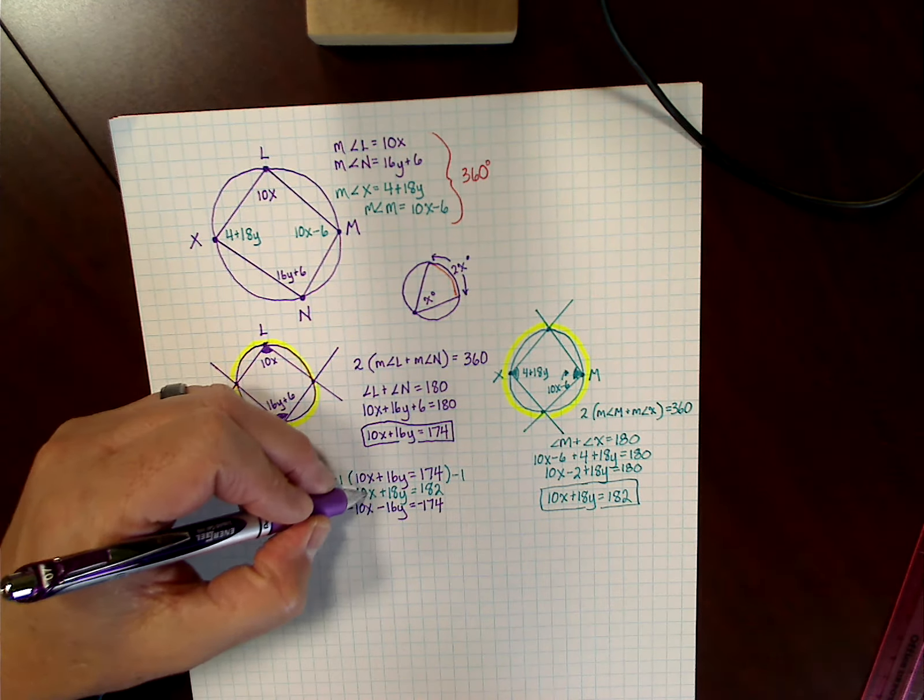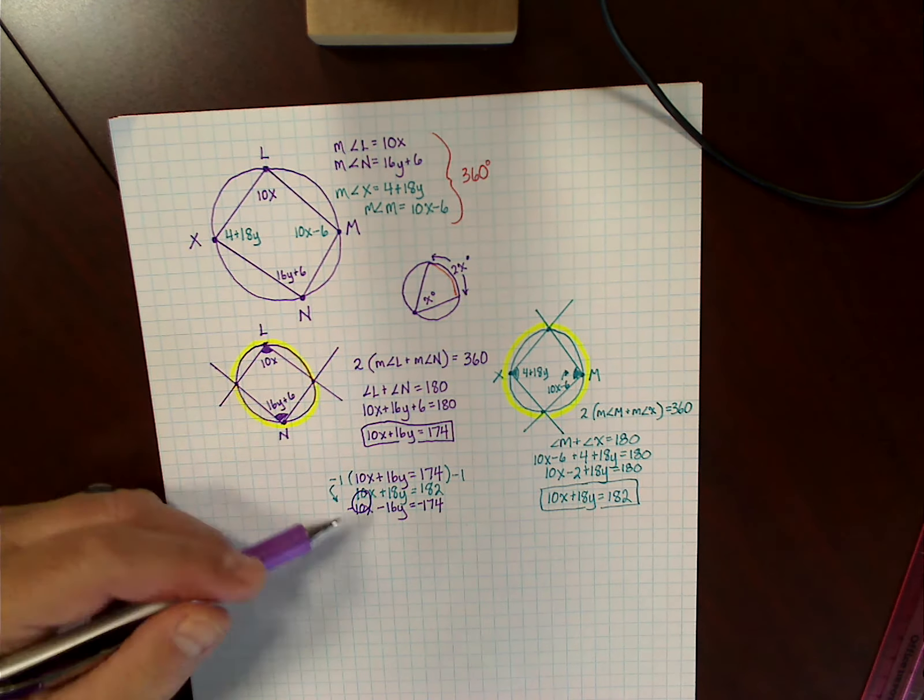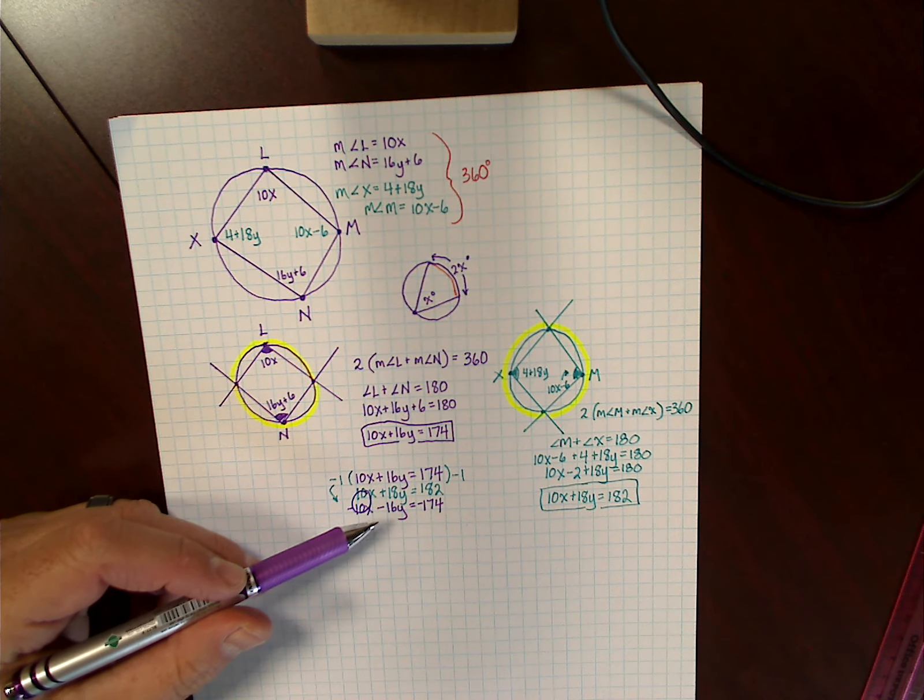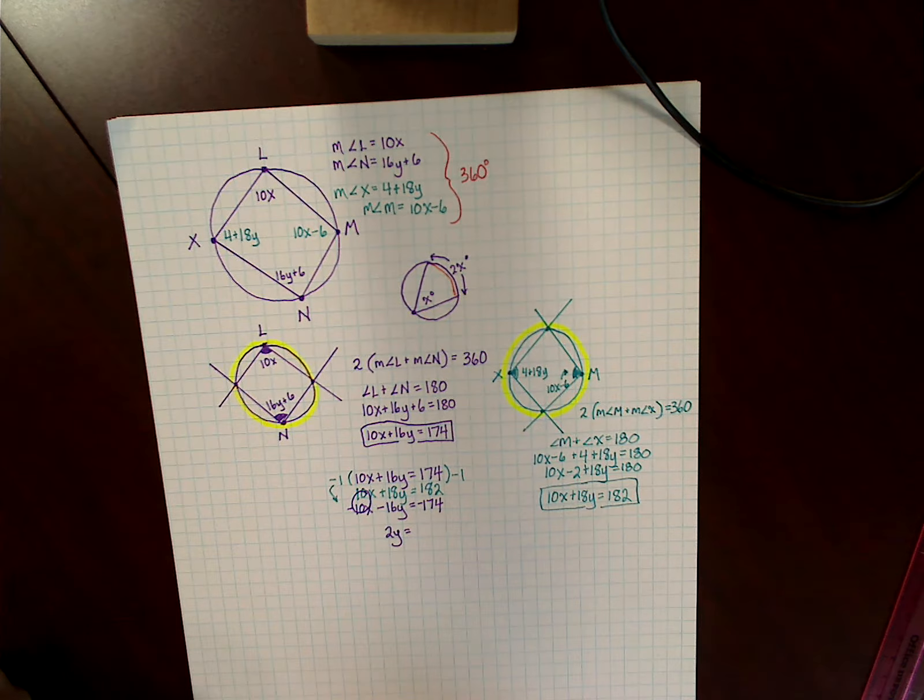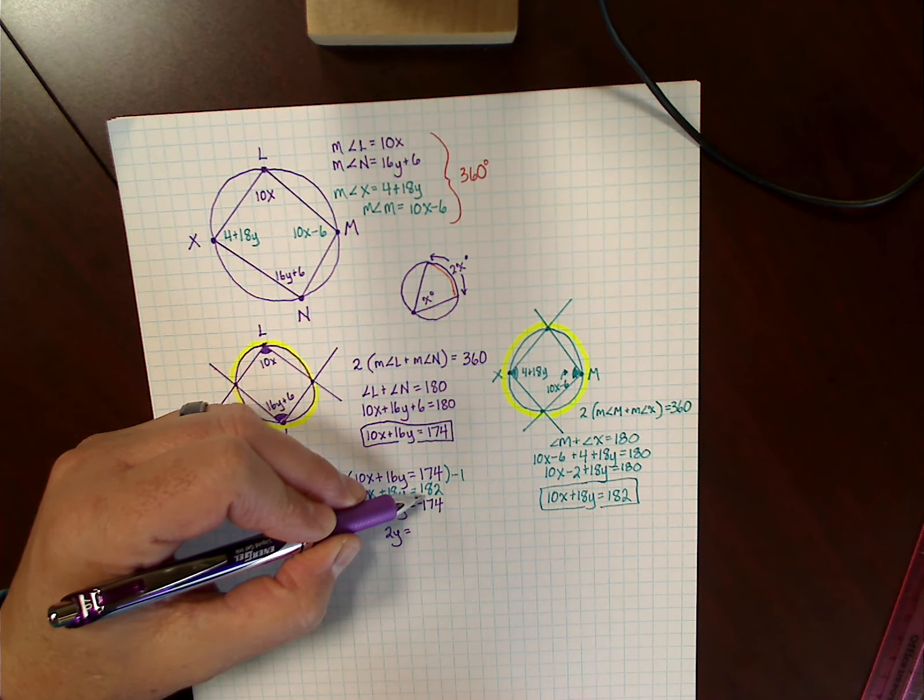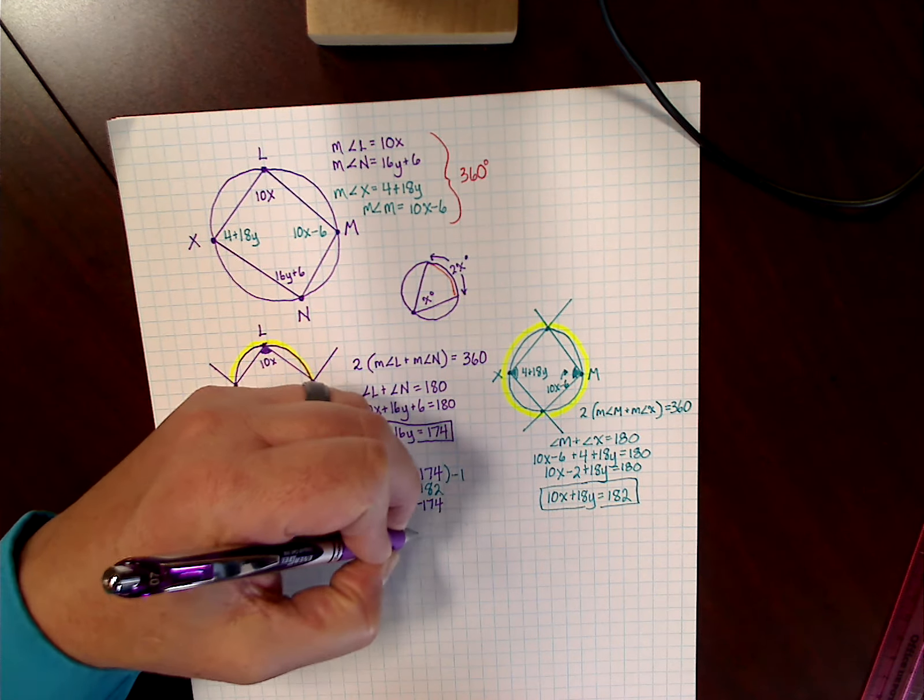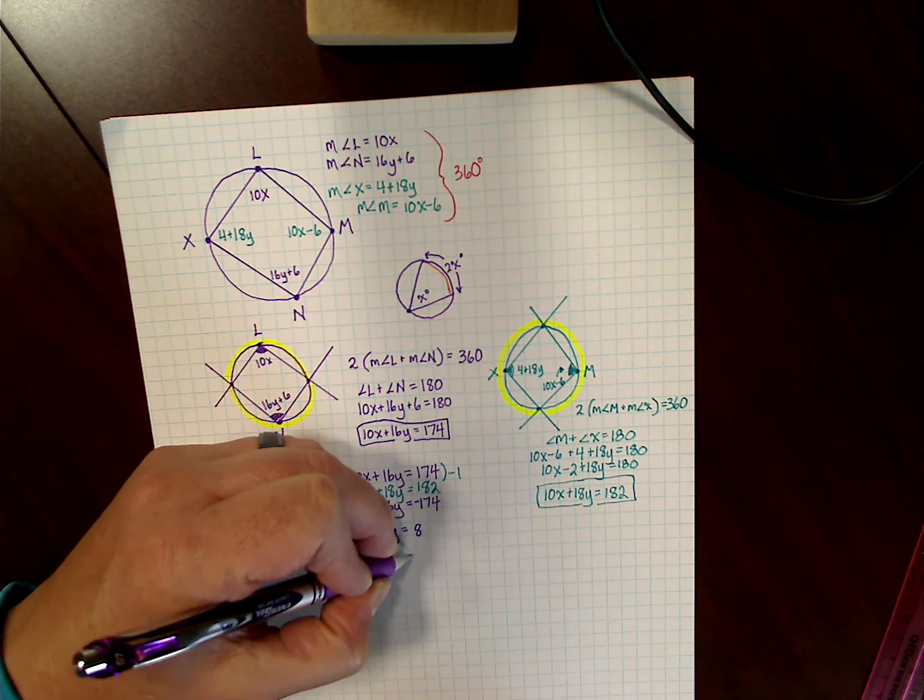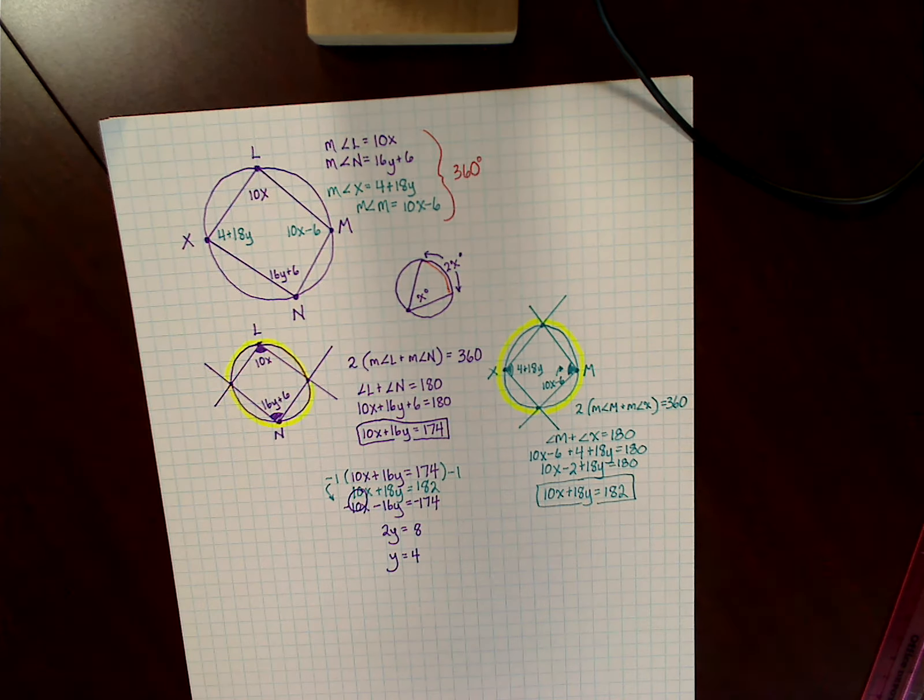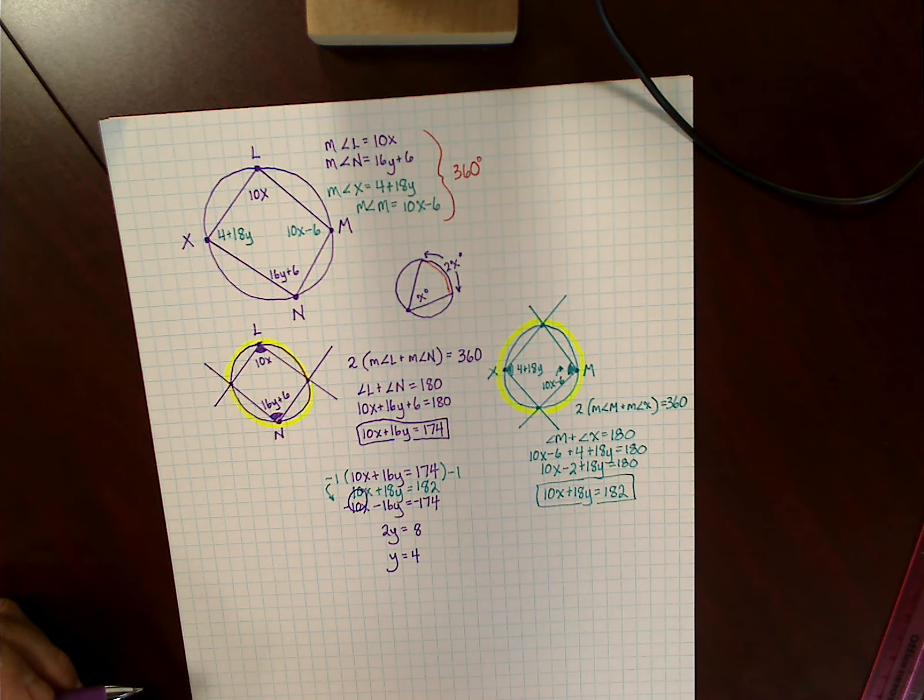So then you can see what's going to happen here. When I add the two equations, I combine them simultaneously. These two variables eliminate. The middle variables, the y values, go to 2y. Then 182 minus 174 gives me a value of 8. So now my y value is equal to 4.